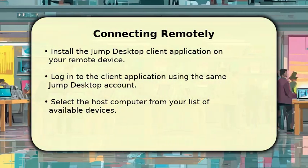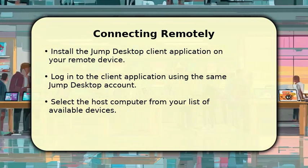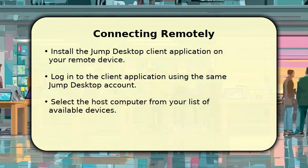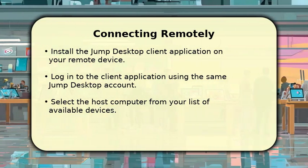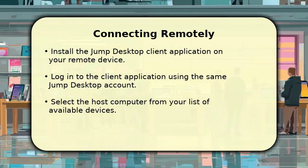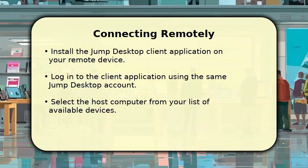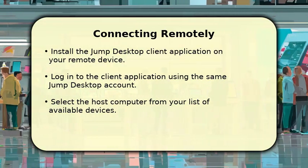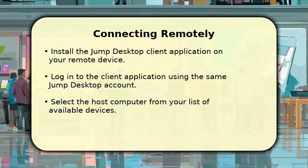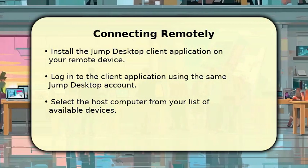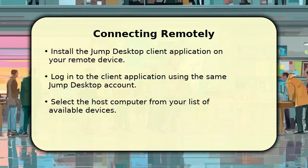Now, let's connect from your client device. Install the Jump Desktop client application on the device you'll be using for remote access, whether it's a laptop, tablet, or smartphone. Log in to the client application using the exact same Jump Desktop account you used on the host computer. Once logged in, you'll see a list of your available host computers. Simply select the one you wish to connect to, and you're ready to go.